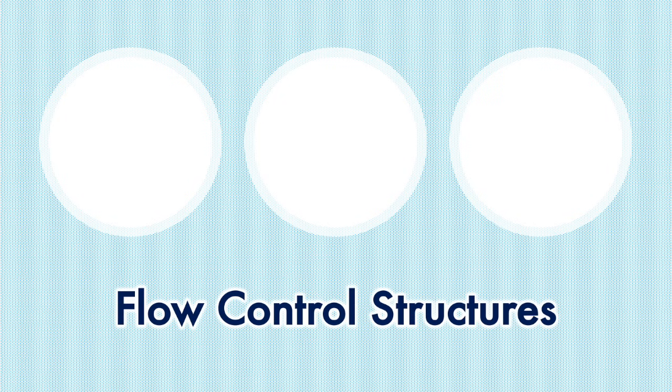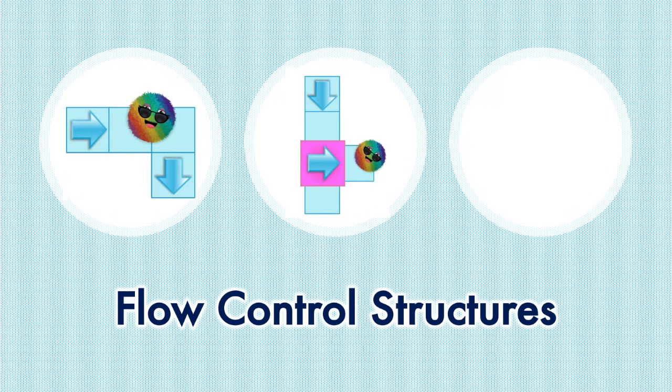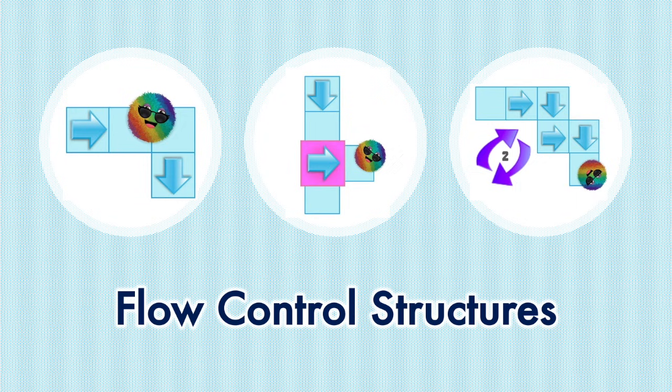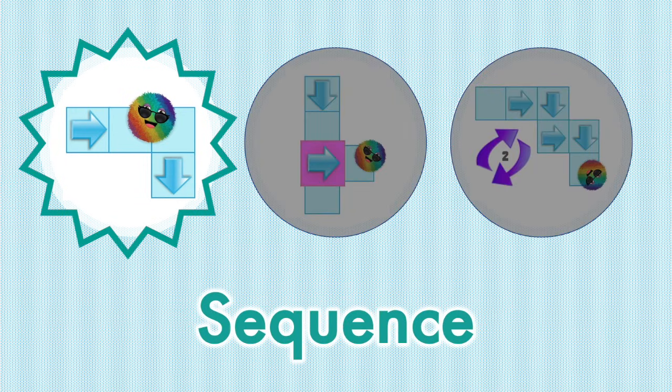There are three basic flow control structures that guide how a program works and what it does. Today we are going to focus on sequence. So what is sequence?